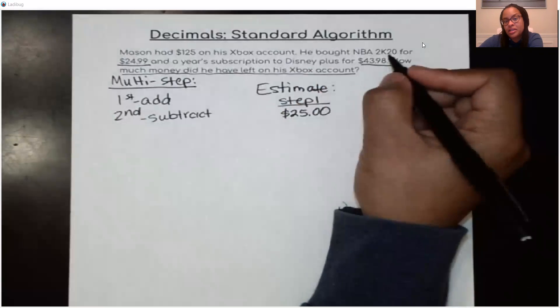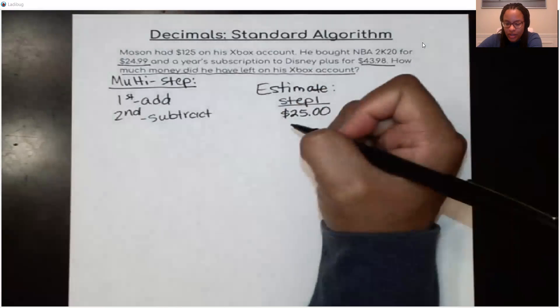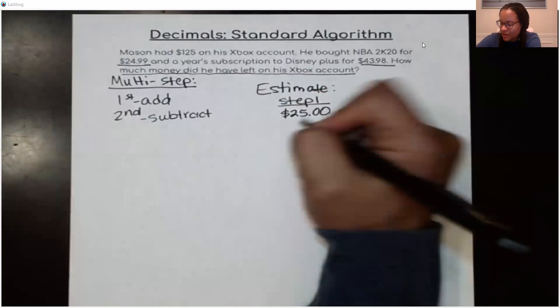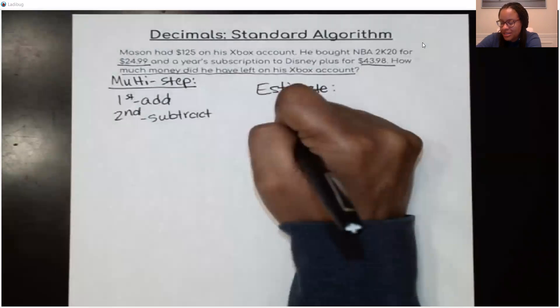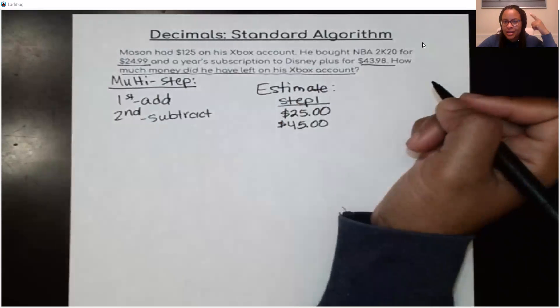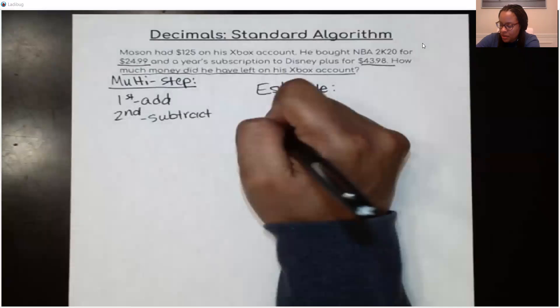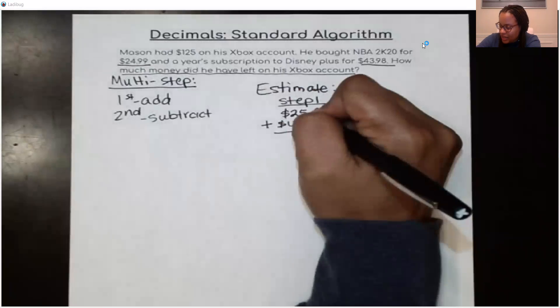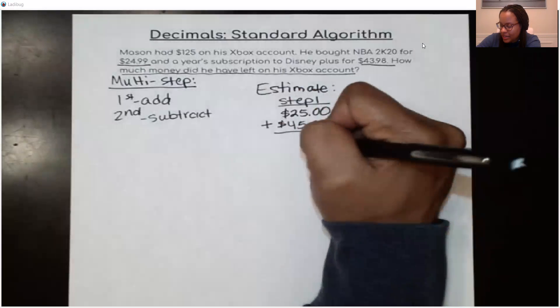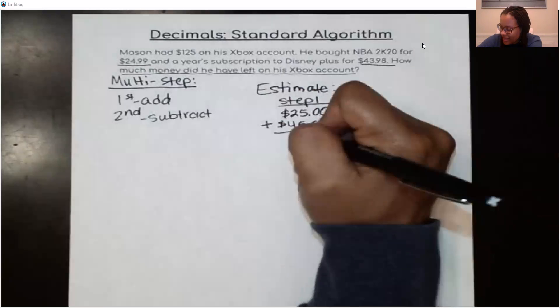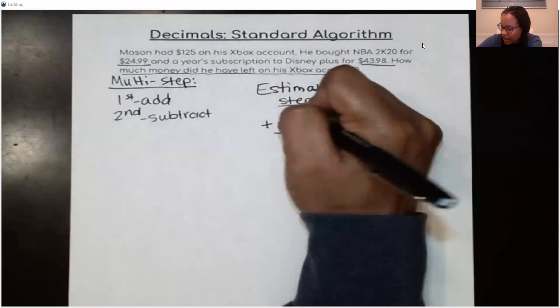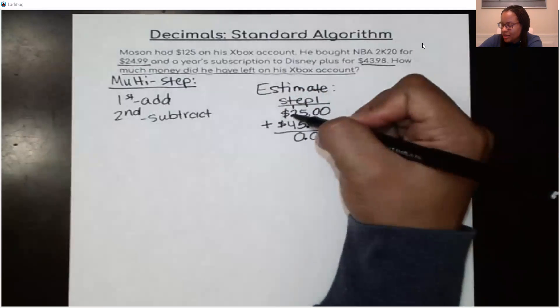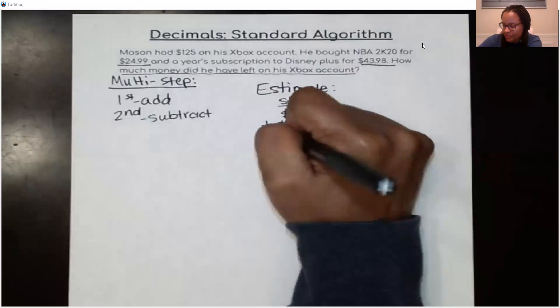$43.98 can just be rounded to $44 or even $45. You can go pretty close because it's just an estimate. As a matter of fact, I can just go ahead and put $45. That's easier for me to add it up mentally as well in my head. So I'm going to go ahead and estimate. I'm going to line up my place value amount. So even my decimals are going to be lined up. And it's going to be 5 plus 5 is 10. So I'm going to put a 0 here and carry the 1 to the next place over. And 1 plus 2 is 3. 3 plus 4 is 7.